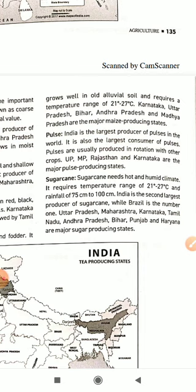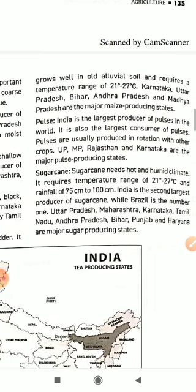Sugarcane needs a hot and humid climate. It requires a temperature range of 21 to 27 degrees Celsius and rainfall of 75 cm to 100 cm. India is the second largest producer of sugarcane in the world, while Brazil is number one.